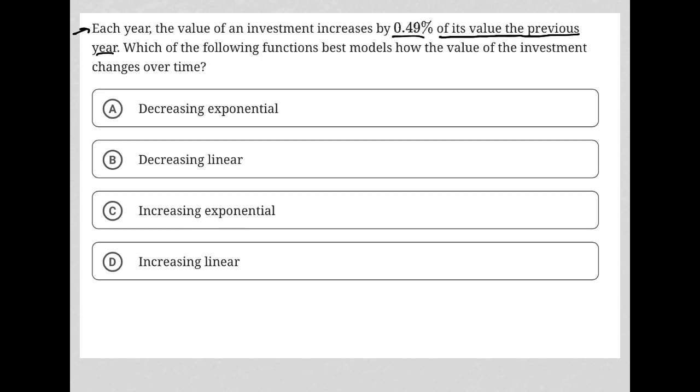That's called compound growth, right? So every year, whatever the actual value that 0.49% represents, it's going to be larger year by year because the basis from which we're determining this percentage is increasing.